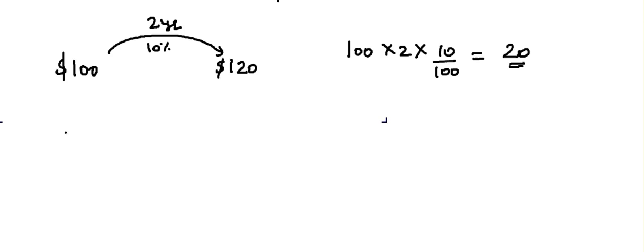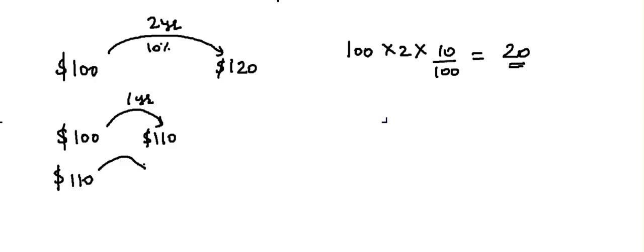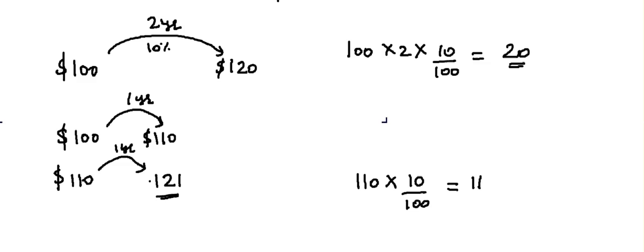But suppose you invest for only one year — the $100 becomes $110. Then you take that money out and invest it again for one year. Instead of getting $10, you get $11, because 110 × 10 divided by 100 equals $11. After that second year, you end up with $121.